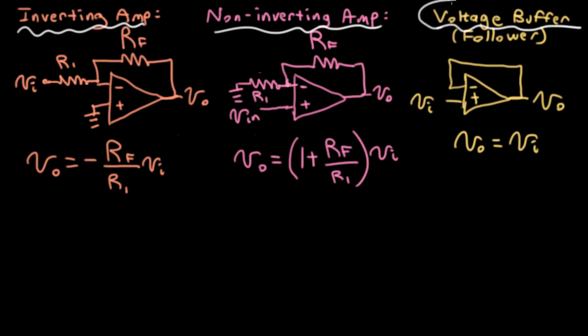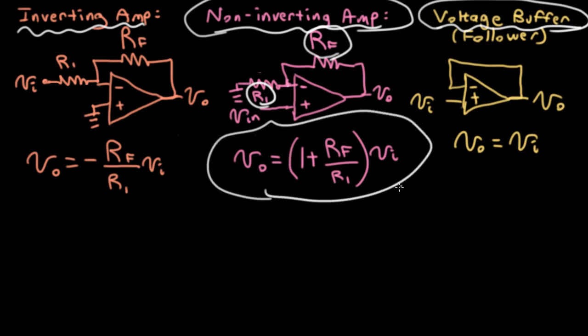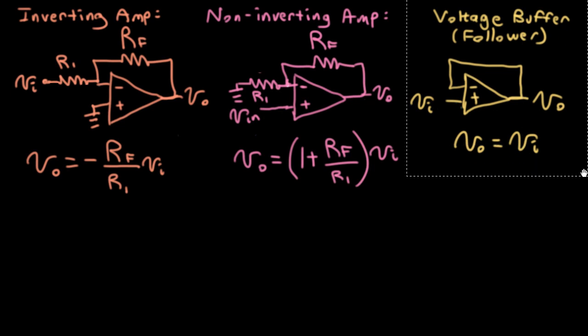The last one, the voltage buffer, was really a special case of the non-inverting amplifier, where you can think of either letting R1, this resistor to ground, go to infinity, or you can think of RF, the feedback resistance, as going to zero. In either case, our gain formula would reduce to the output being equal to the input. We're not going to need the voltage buffer today, so let's go ahead and get rid of that.